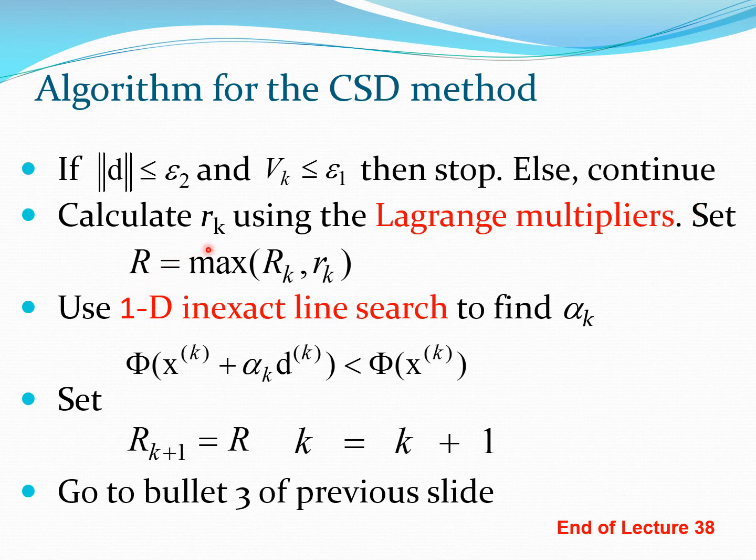At this point you calculate this r_k using the Lagrange multipliers. If you do not remember this, go back to the lecture on the descent function and you will see it defined there. Then you set this capital R as the max value of R_k and small r_k. Recall that capital R_k is what you have set as the value starting from 1, but then it is going to change as this method progresses. It is going to use one of these values, whichever is the maximum value.